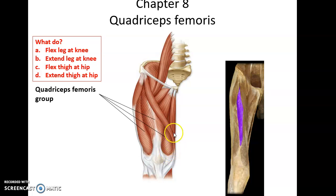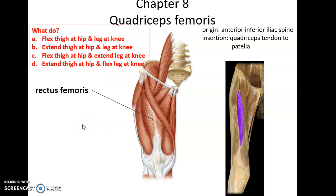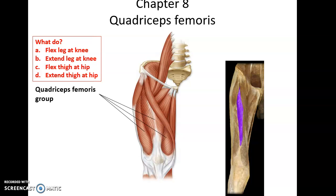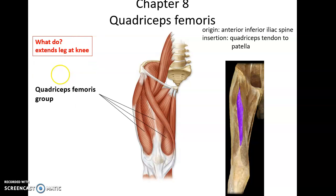The quadriceps femoris group is a group of four muscles found in the anterior region of the thigh. It includes rectus femoris. All four muscles work to extend the leg at the knee — to straighten the knee out if it's bent.